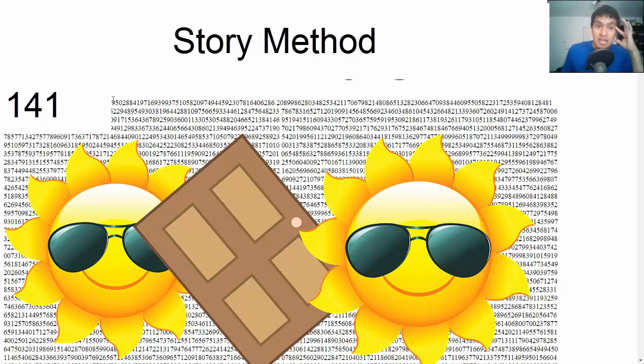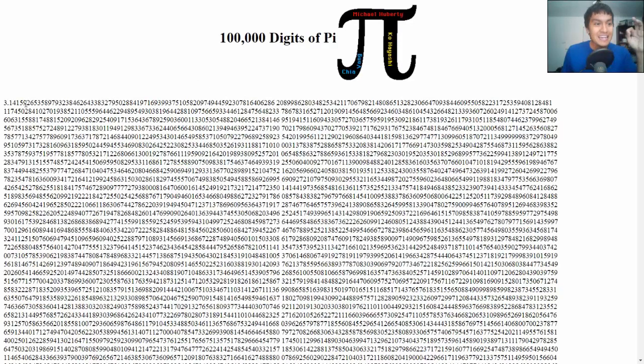Now, if you're trying to memorize 100,000 digits of pi, that is one humongous story. And I probably don't recommend it because you might lose track of it. You might skip some numbers here or there. And so it's really up to you on how you want to do it. Maybe using the story method and it works for you. Maybe connecting everything in one big story is perfect for you. That's something you kind of have to experiment with.